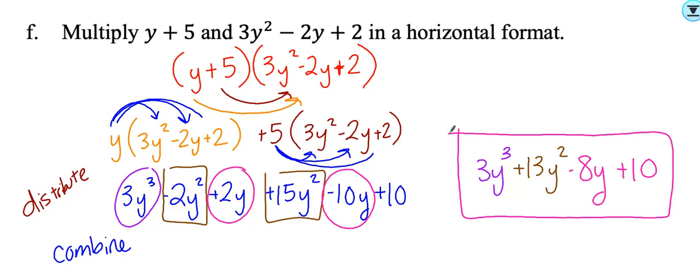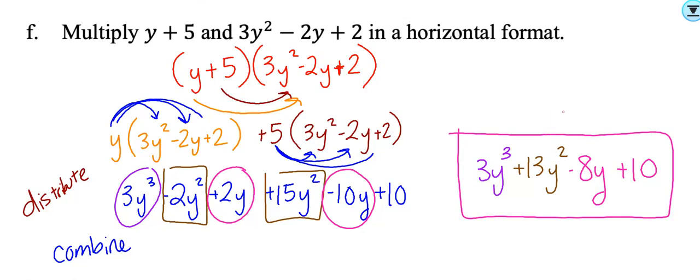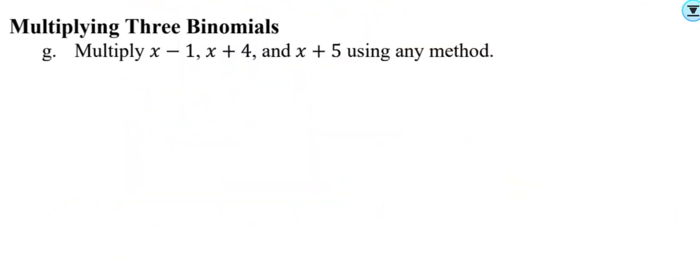I personally like the box method better, so I will be doing that in the future. Not only can you multiply two polynomials, you can also multiply three polynomials. When you're multiplying three polynomials it's the same process, just two times the work.